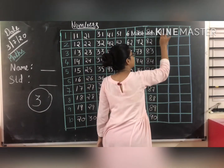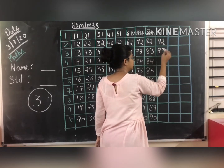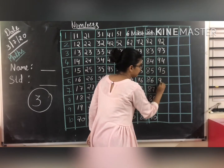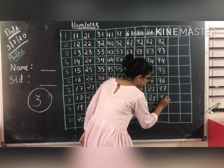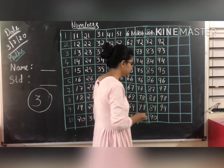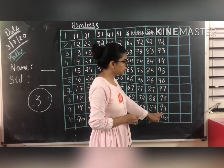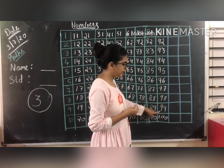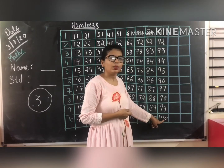After 90: 91, 92, 93, 94, 95, 96, 97, 98, 99. What comes after 99? 100. So till 99 there are 2 digits. After 99, the 1 increases and the 10s scale also increases by 1, so it becomes 1 double-0 — what is it? 100.